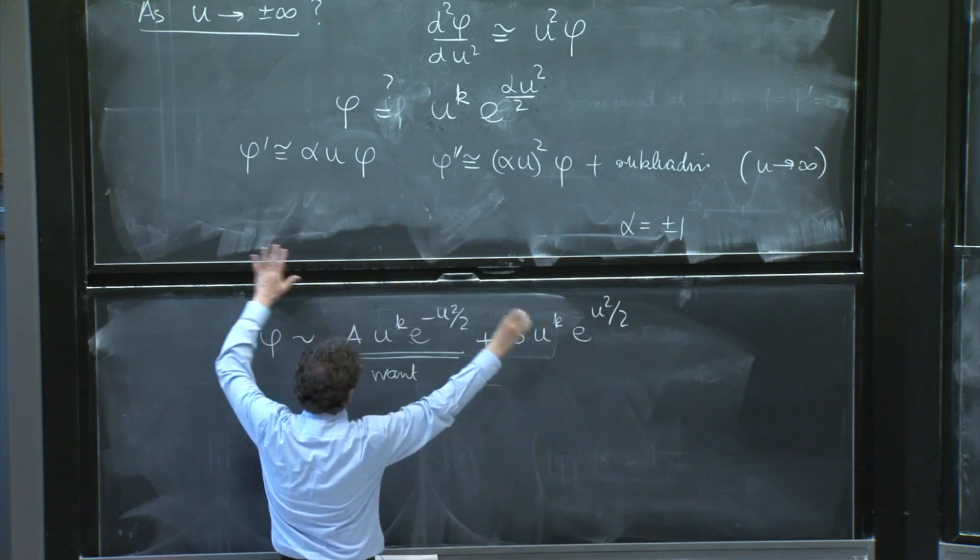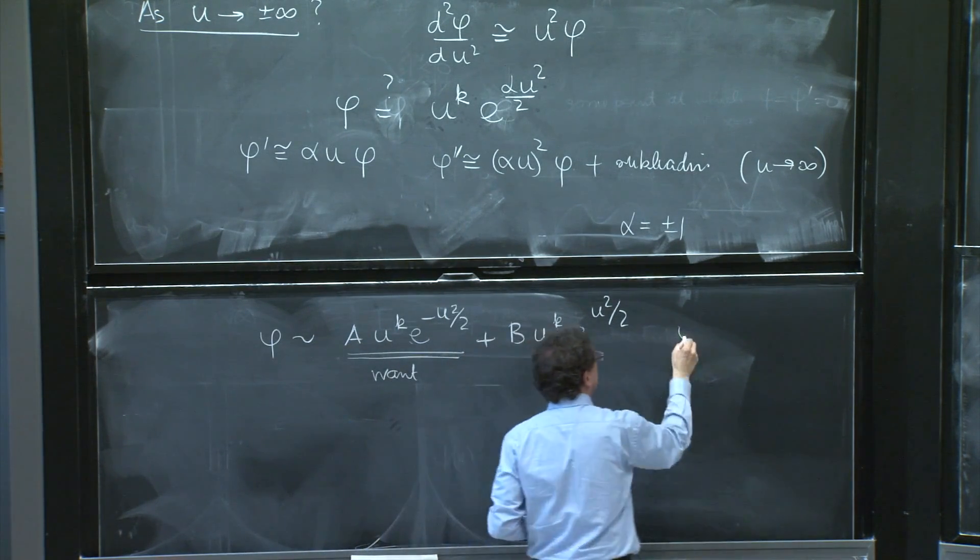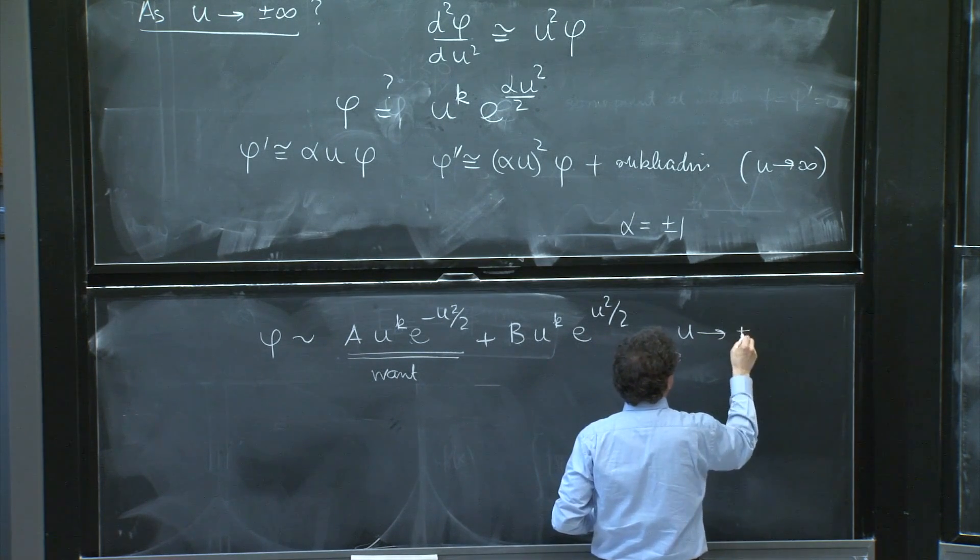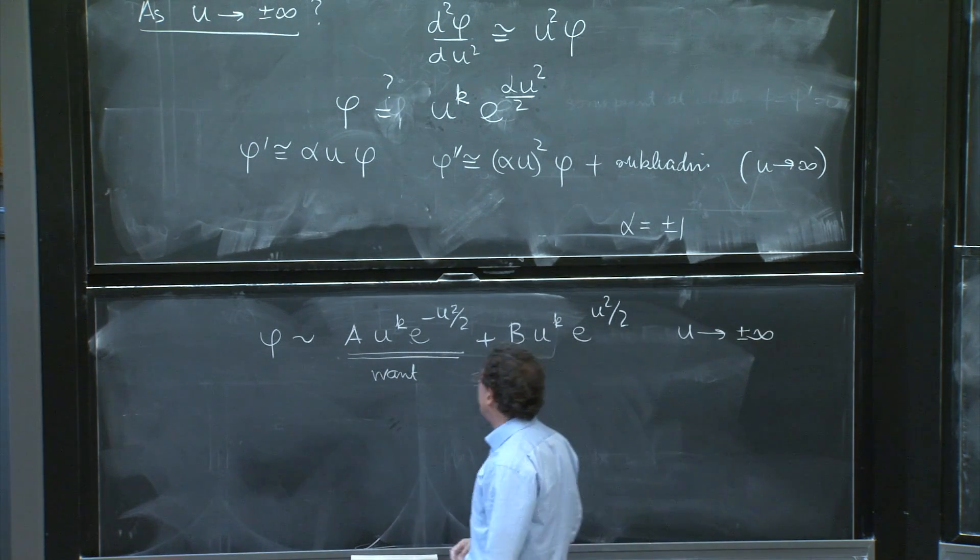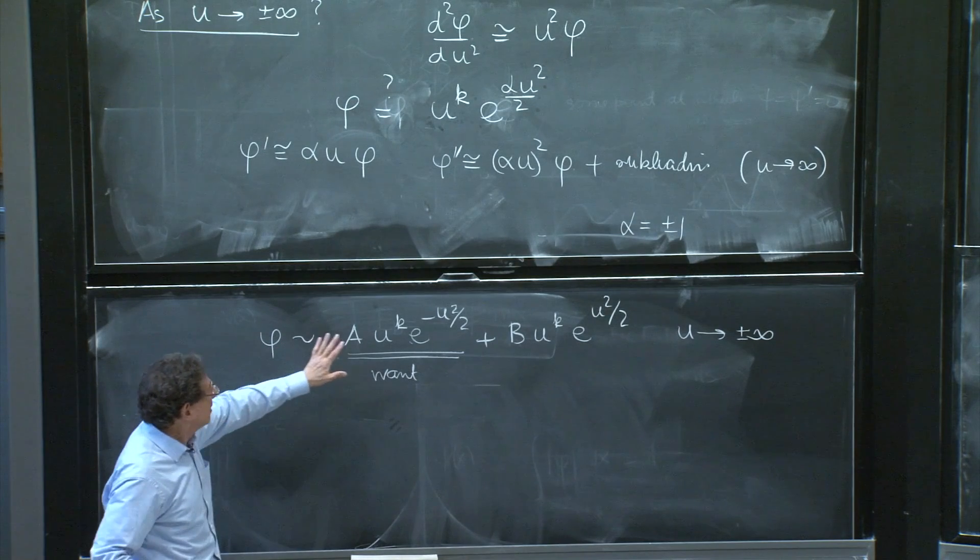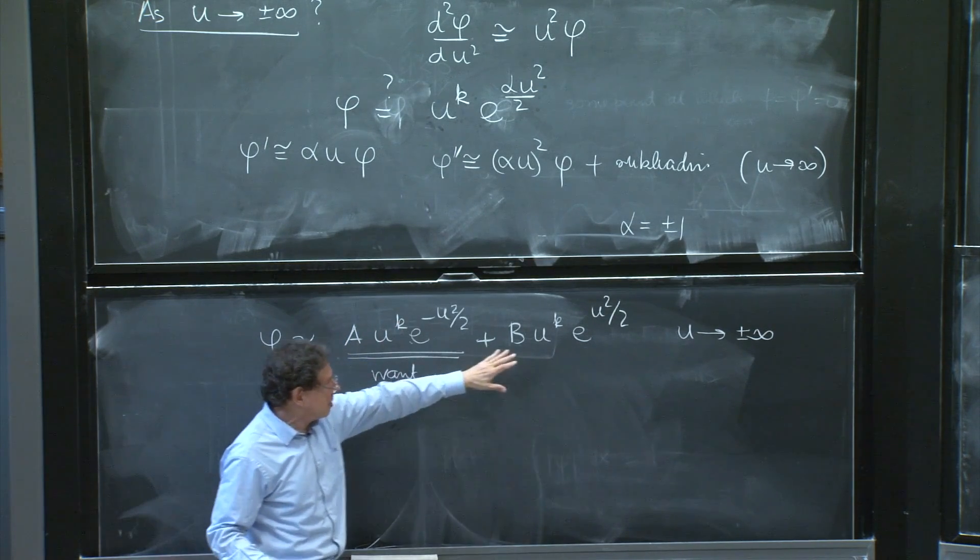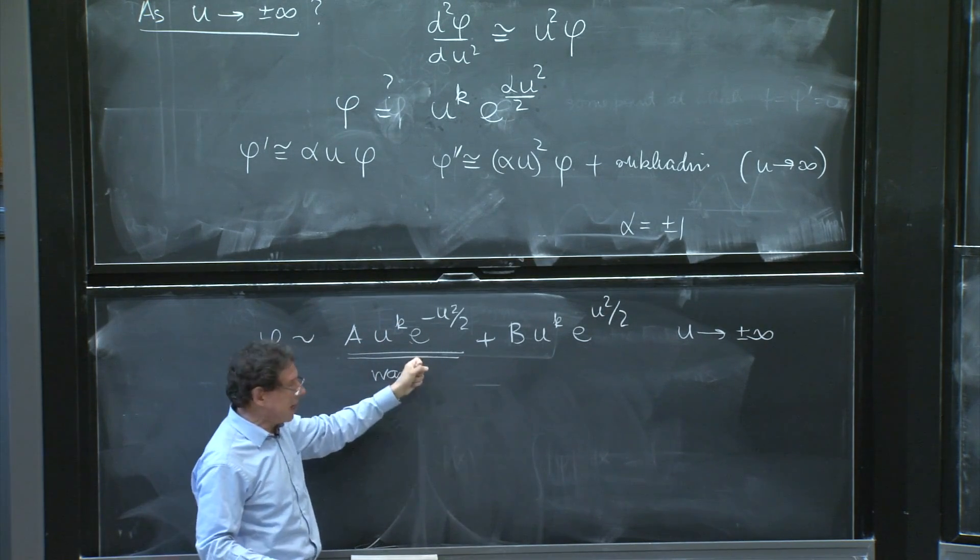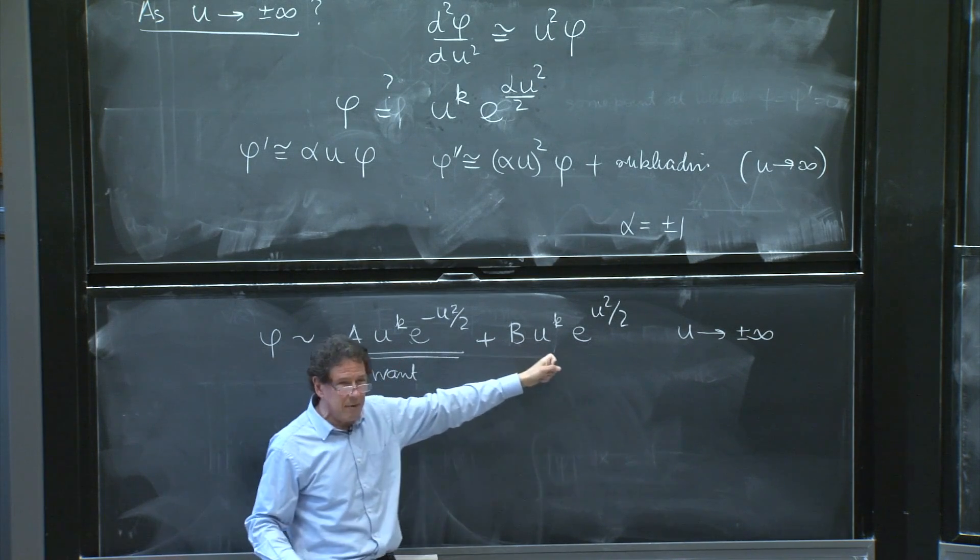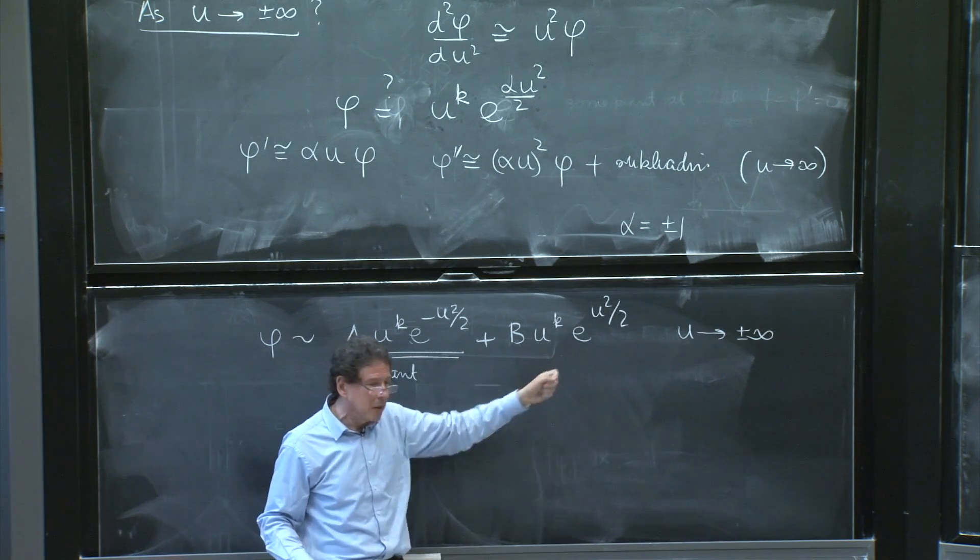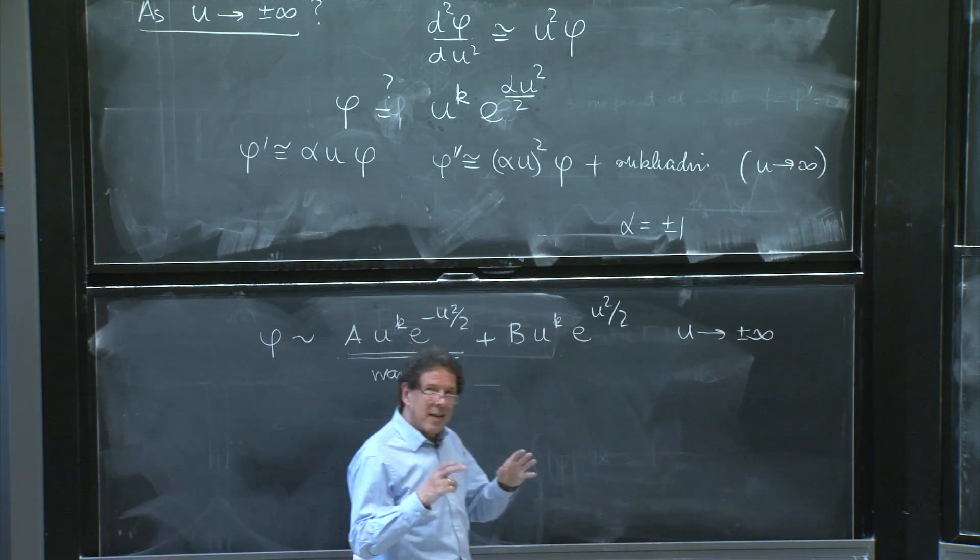This is not an exact solution of anything yet. We're just looking at u going to plus minus infinity. And maybe we'll have such a behavior or such a behavior. But we want this one. Otherwise, we will never be able to normalize it.